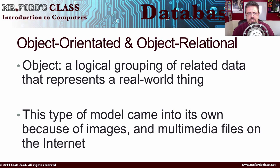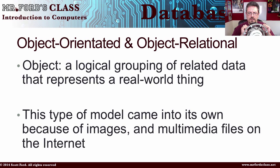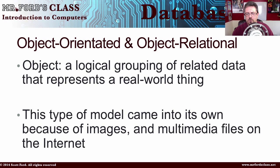The next ones are object-oriented and object-relational. An object is a logical grouping of related data that represents a real-world thing. What we're looking at here is an item that is going to have the data associated with it — it's going to represent a real-world, actual tangible object.